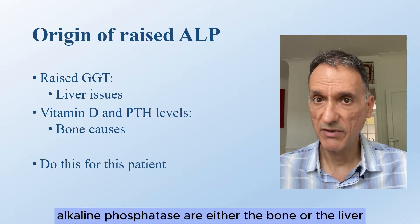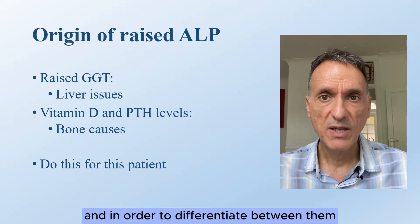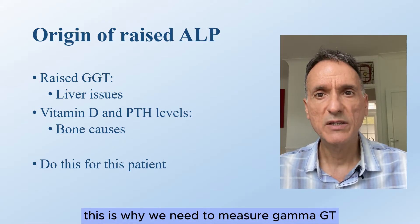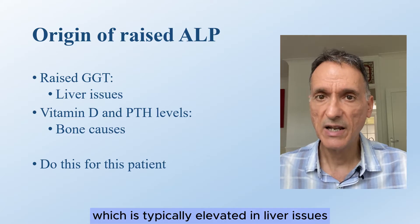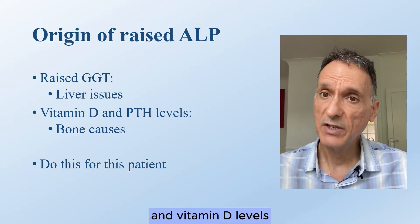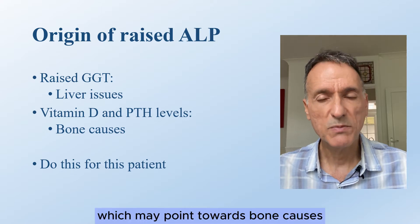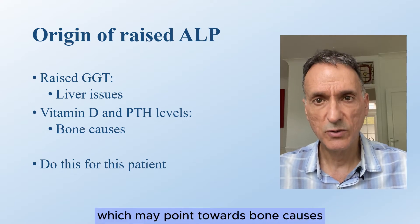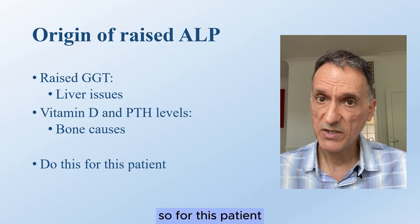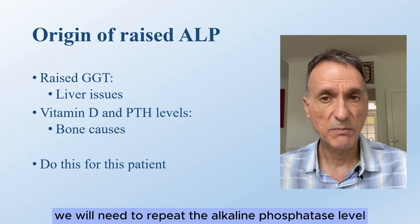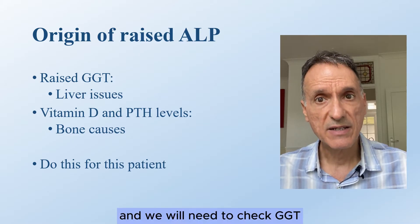The most likely sources of raised alkaline phosphatase are either the bone or the liver. To differentiate between them, we need to measure gamma GT, which is typically elevated in liver issues, and vitamin D and PTH levels, which may point towards bone causes.